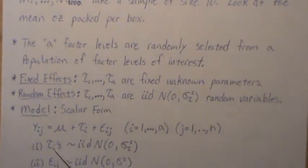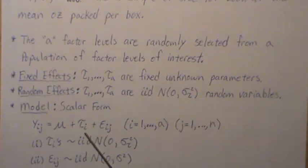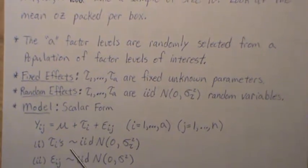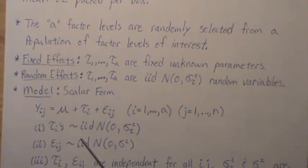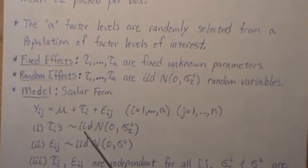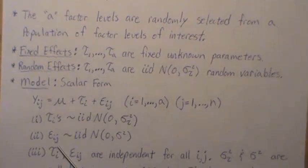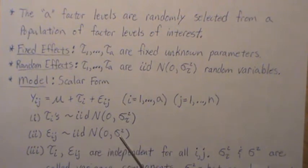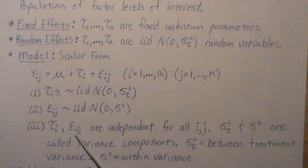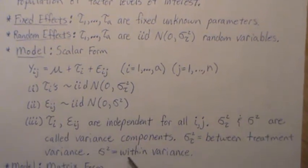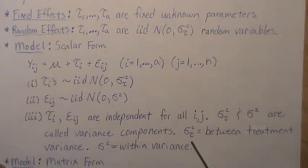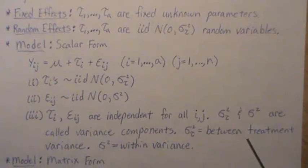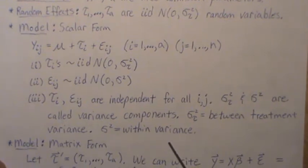The model in scalar form is Y_IJ = mu + tau_I + epsilon_IJ, where I goes from 1 to A and J goes from 1 to N. The tau_I's are IID normal with mean zero and variance sigma tau squared. The epsilon_IJ's are IID normal with mean zero and variance sigma squared, and they're independent of the tau's. Sigma squared tau and sigma squared are the variance components — sigma tau squared is the between-treatment variance and sigma squared is the within variance.